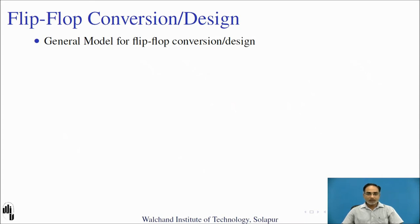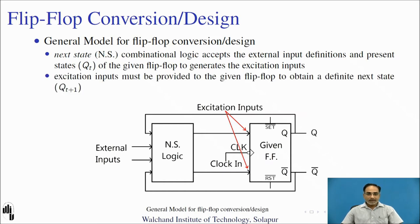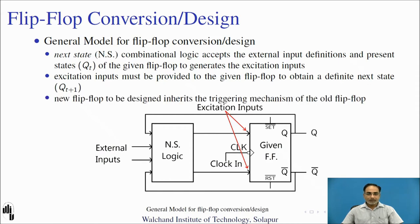We are using a JK flip-flop to design a T flip-flop. The next state logic is a combinational logic circuit which accepts external inputs and the present state of the flip-flop. This next state logic is always used to generate excitation inputs required for the given flip-flop, and this is how you achieve flip-flop conversion. The excitation inputs must be provided to obtain the definite next state as per the given specification — in this case, the T flip-flop function table.